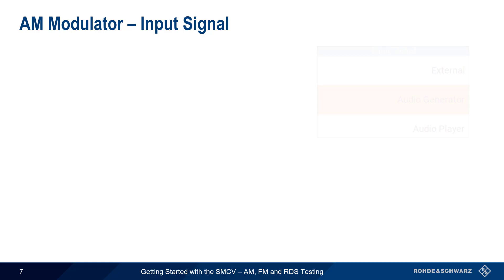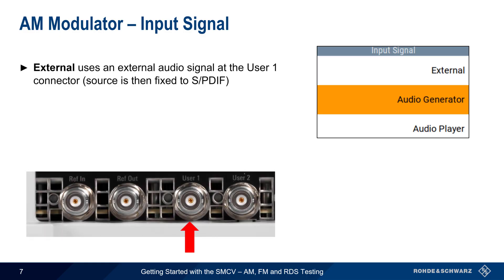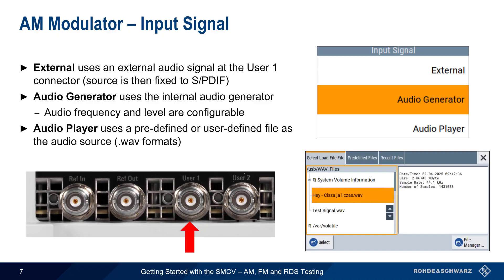The SMCV supports three different sources of AM modulation. If input signal is set to external, an external SPDIF modulation source can be connected to the User 1 BNC connector on the rear of the SMCV. The SMCV also has an internal audio generator that can create a simple tone, where both the frequency and the level are configurable. Finally, the SMCV can also use an audio file in WAV format as the modulation source. These files can be copied to the SMCV over the LAN connection or via a standard USB drive.